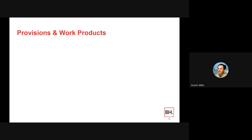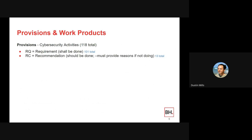Let's talk about the organization of ISO 21434. First, the prescribed cybersecurity activities — these are things you must do to become certified or to show that you have a robust cybersecurity management system. These cybersecurity requirements are called provisions; there are 118 at the time of making this video. There are three different types: the majority are requirements, things that shall be done; then recommendations, things that should be done; and permissions, things that may be done.